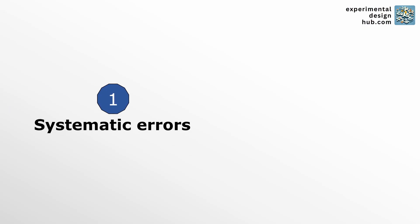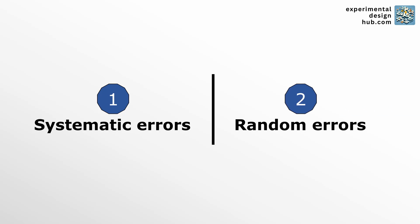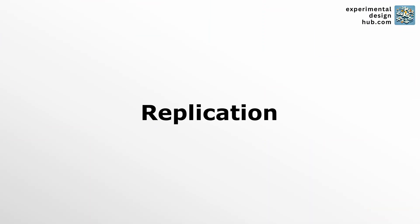Whenever you're performing an experiment you're dealing with errors, and broadly you can categorize them into systematic errors and random errors. In this video we're going to look at the difference between those two, what impact they have on your experiments, and then we're also going to look a little bit at error management. But the video is also setting the stage for my next video about replication, randomization, and blocking in the context of design of experiments, or DOE.